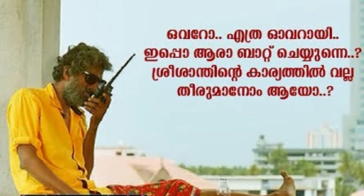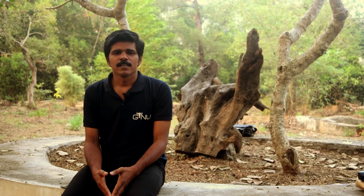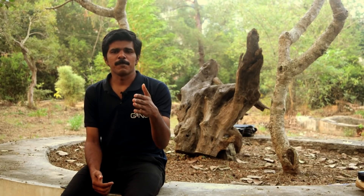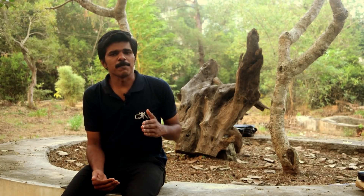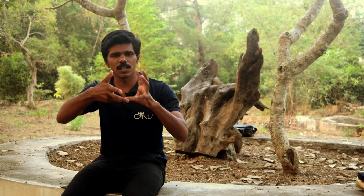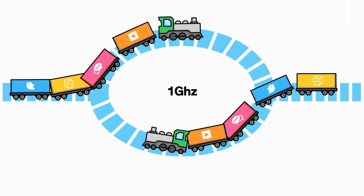Full duplex is like a helicopter operating on a specific frequency — you can receive and transmit simultaneously. Traditionally, signals were sent and received on separate frequencies, like a train on one track. With full duplex, you can operate on different frequencies simultaneously. When you switch between channels, the frequency passes signals to the other side — that's how full duplex works in 5G.